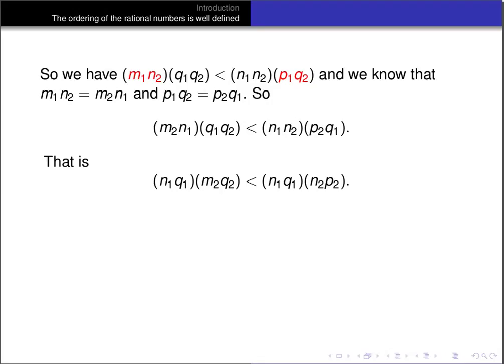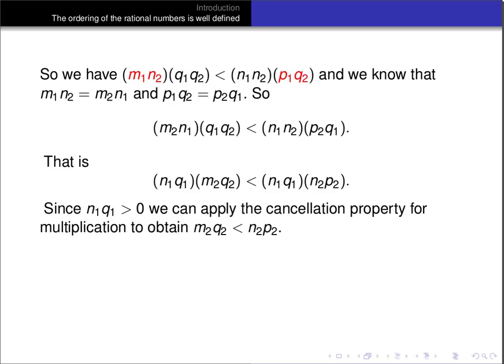There is an n1 q1 on both sides of the inequality, and it's greater than zero since n1 and q1 were denominators and therefore positive integers. So we can apply our cancellation property for multiplication and get that m2 q2 is less than n2 p2. That exactly means that m2 over n2 is less than p2 over q2, which is what we had to prove to show that our ordering on the rational numbers is well-defined. So that concludes this video. Thanks for listening.